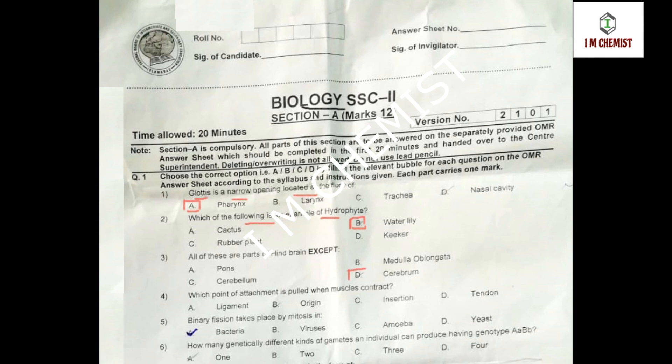The next MCQ is: which part of attachment is pulled when a muscle contracts? The right option is option number C, that is insertion. Insertion is the part that is pulled when a muscle contracts.